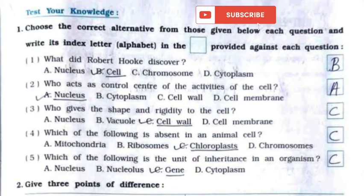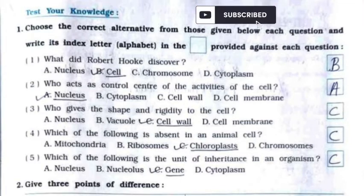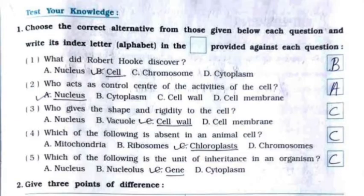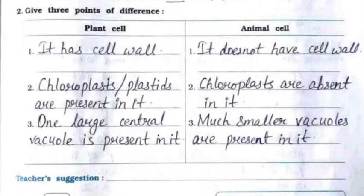Fourth: which of the following is absent in an animal cell? Answer: chloroplast. Fifth: which of the following is the unit of inheritance in an organism? Answer: gene. Now question number 2: give three points of difference between plant cell and animal cell.